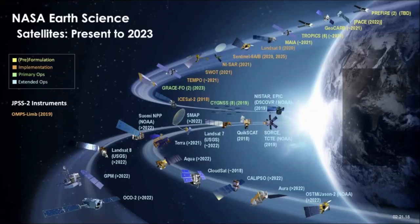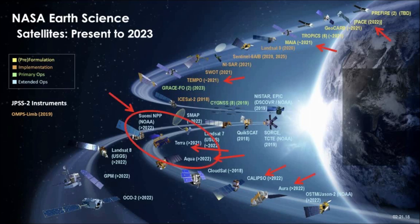There are many Earth-observing satellites in space — not just from NASA but from other space agencies — and many more are to be launched in coming years. For particulate measurement, we will be using data from three different satellites: Terra, launched in 1999; Aqua, in 2003; and SUOMI NPP in 2011.